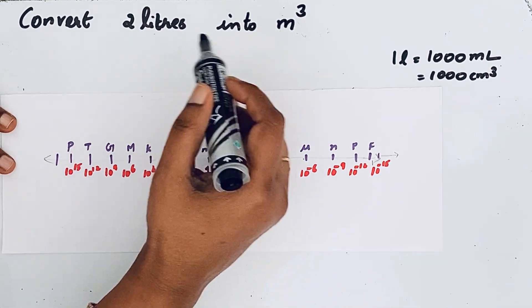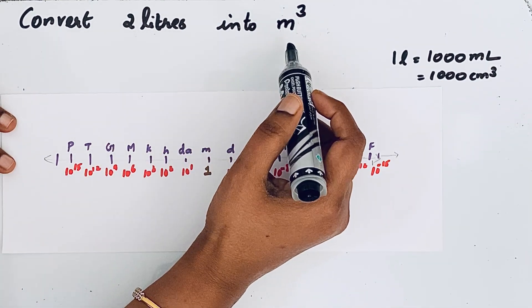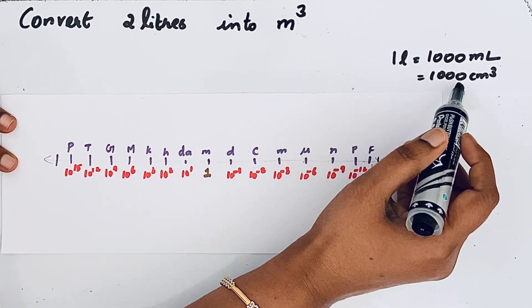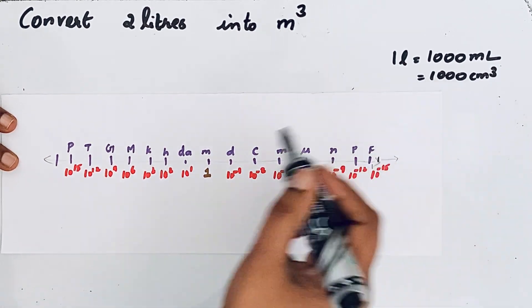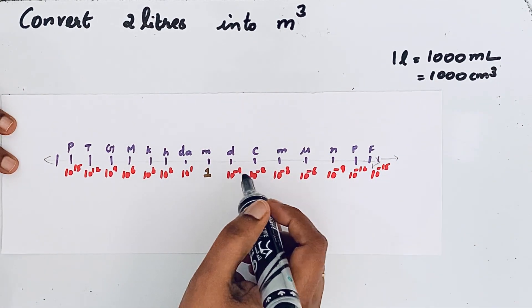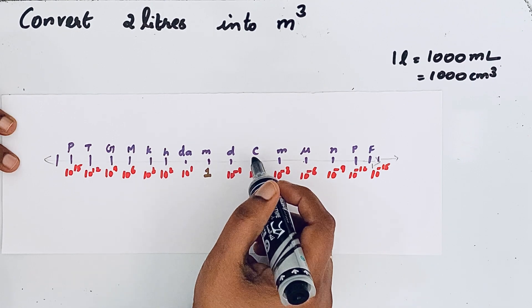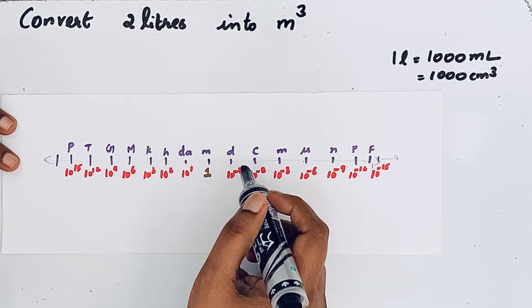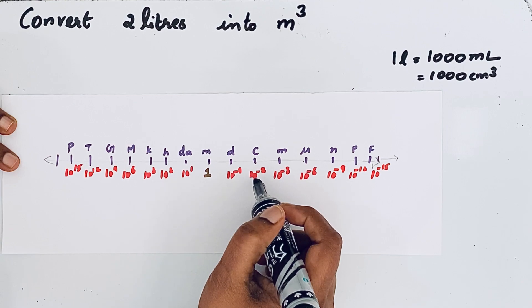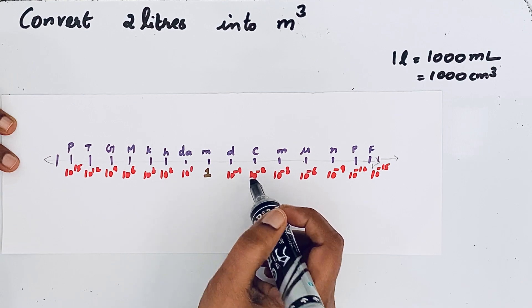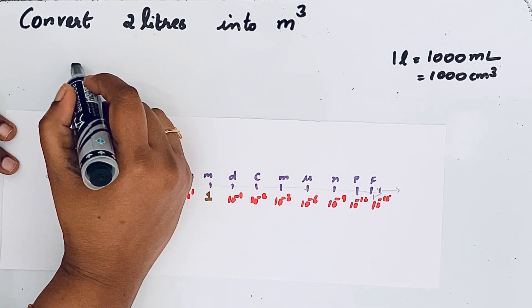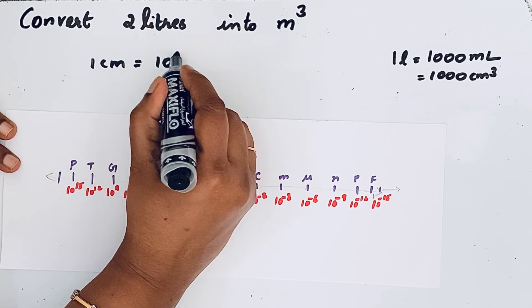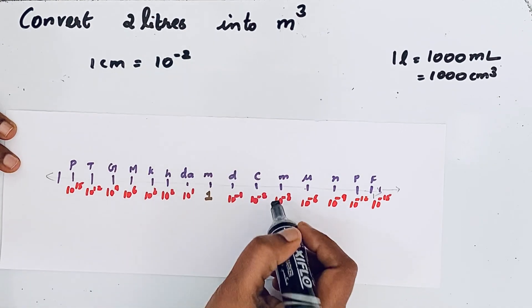But we want the answer in meter cube. We know one liter is equal to 1000 centimeter cube. So let us find how many meters one centimeter equals. One centimeter is equal to 10 raised to minus 2 meter, so we write: 1 centimeter = 10⁻² meter.